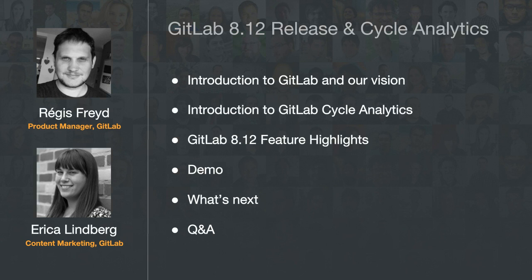In this release we introduced the first iteration of Cycle Analytics, which uses real data from your GitLab instance to give you feedback on how efficiently you and your team actually work. I'll start by introducing GitLab, then pass it over to Regis to walk through our vision, demo a few key features from this release, share insights into what's coming next, and finally we will close the session with a Q&A.